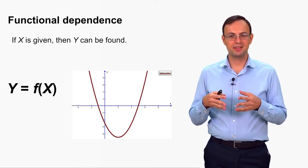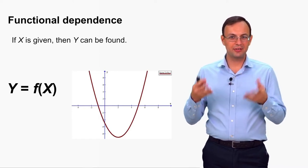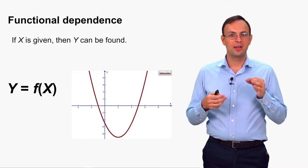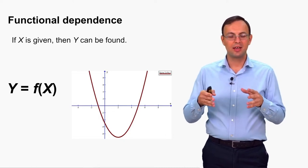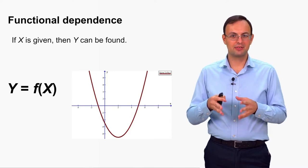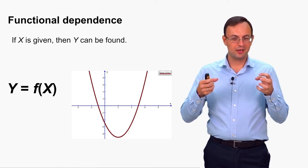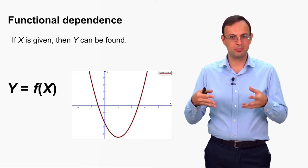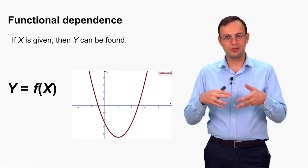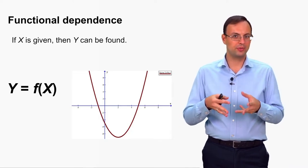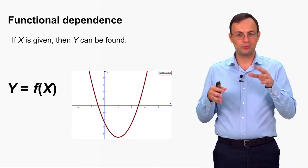Functional dependence is what we know from elementary mathematics, studied in secondary school. There, they usually say that if x is an independent variable and y is a dependent one, that means that y is a function of x — there is a functional dependence, a formula that shows us this relationship between y and x. Using this formula, we can find the value of y when the value of x is given: if x is given, then y can be found — the precise value of y.